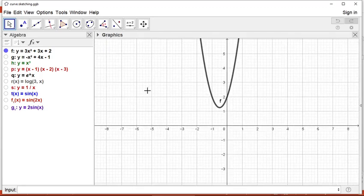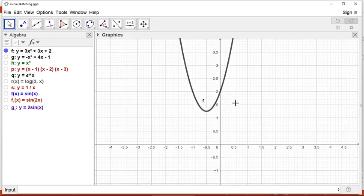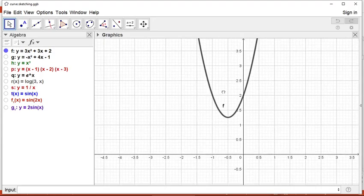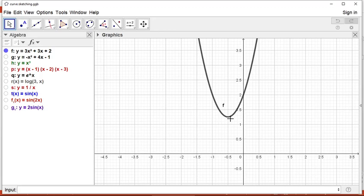First, I have y equal to 3x squared plus 3x plus 2. The graph shows the vertex here. It opens upwards. It is symmetric.